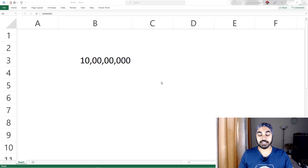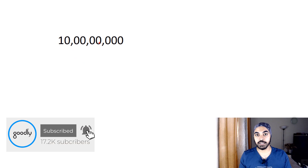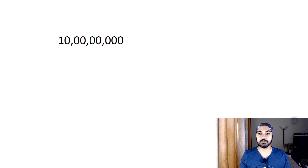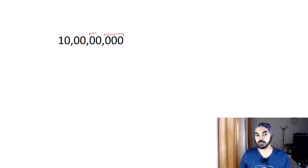I'm in this Excel file right here where I have written a large number. If you're based in the US or any other part, this number is 100 million, but the way we read it in India is 10 crores. The first comma comes after the first three digits — the hundreds — and then after every two digits we apply a comma. So this one is thousands, this one is lakhs, and this one is crores. That's how we apply commas in India: first three digits, then a comma after every two.